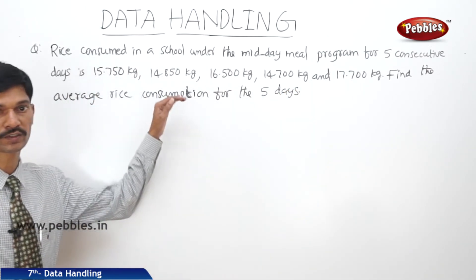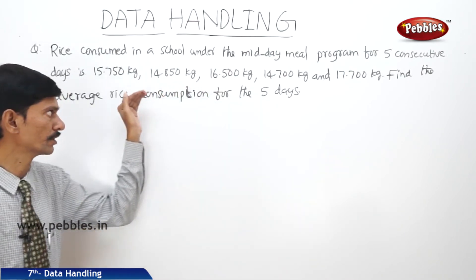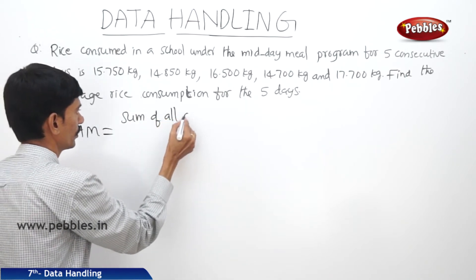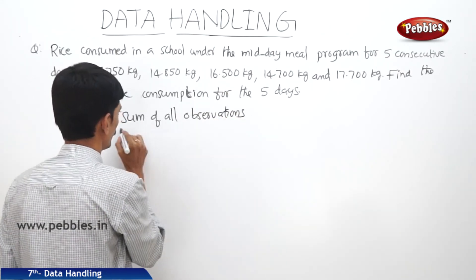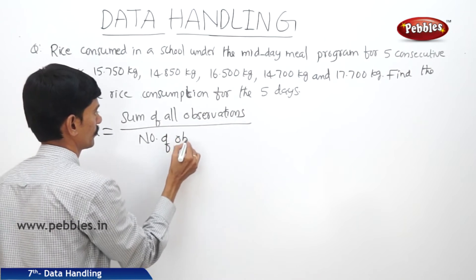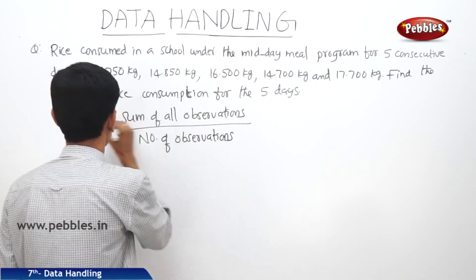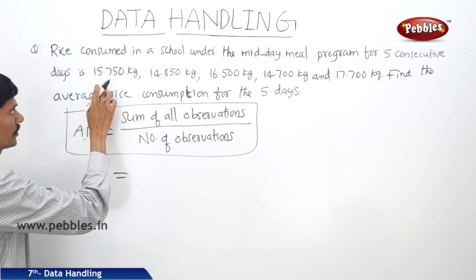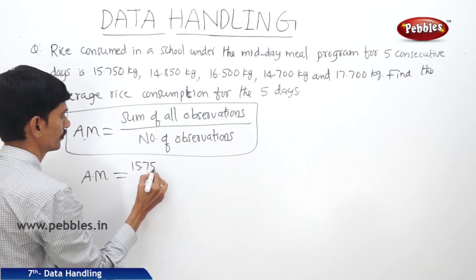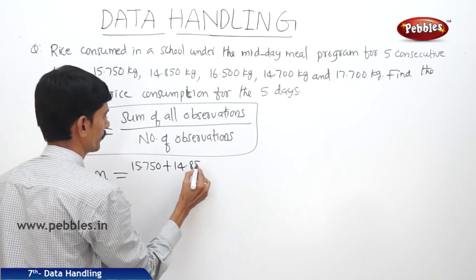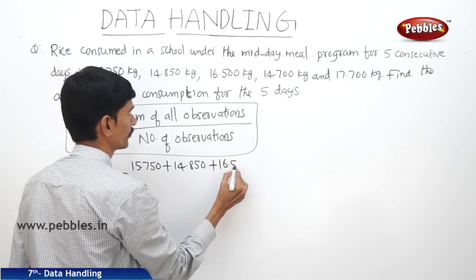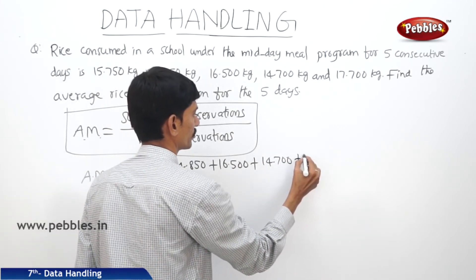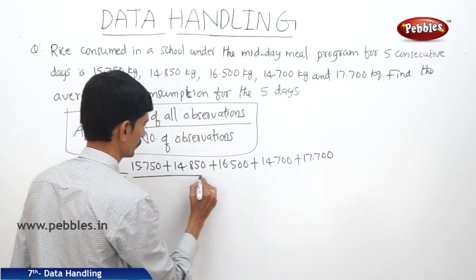We have to find the average rice consumption for the 5 days, which means finding the arithmetic mean of the given observations. Arithmetic mean equals the sum of all observations divided by the number of observations. So arithmetic mean equals 15.750 plus 14.850 plus 16.500 plus 14.700 plus 17.700, all divided by 5.